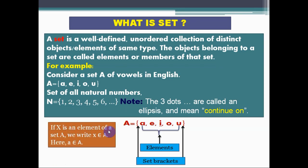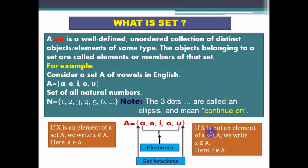One more thing: if x is an element of a set A, we write x belongs to A. Here a is an element of set A, therefore we can write this as a belongs to A. Also, if x is not an element of a set A, we write x not belongs to A. Here f not belongs to A. You can see that f is not an element of set A, so we can write this as f not belongs to A.